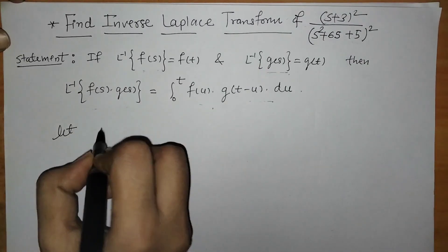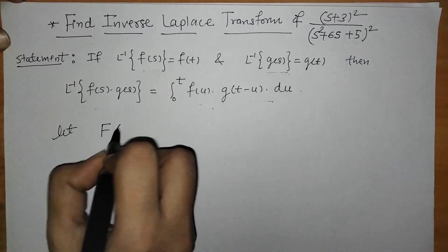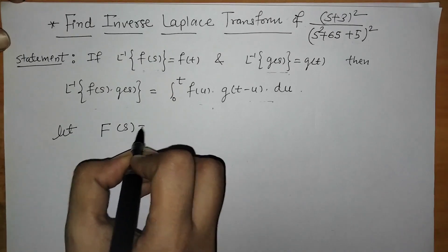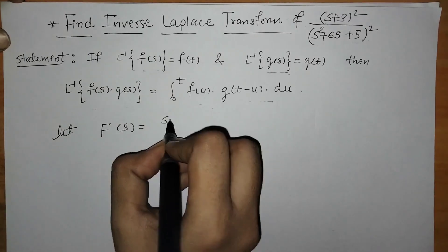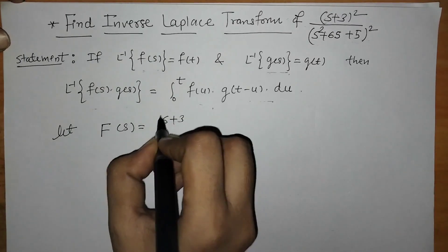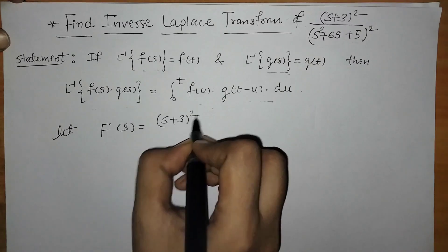If we have the inverse Laplace of two functions f(s) and g(s), then the inverse Laplace of their product can be found by using this integral. Here we have to use the convolution theorem for finding the inverse Laplace of this given function. Let us consider this capital F(s) as the given function.